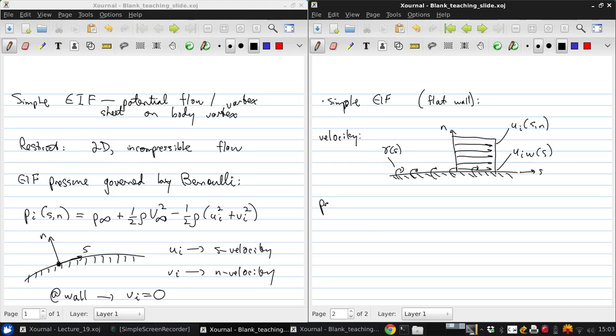The pressure is our wall, the S direction, the N direction, and the pressure is just going to be Pi because the velocity is not varying. So the pressure won't vary, and then we get Piw of S.